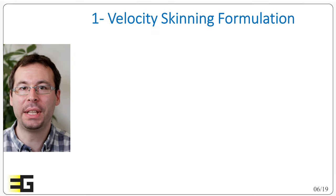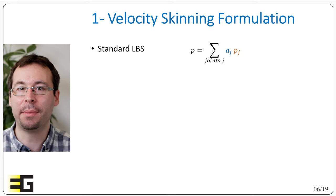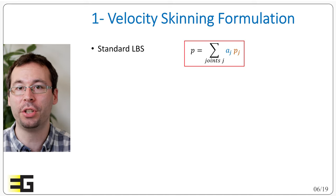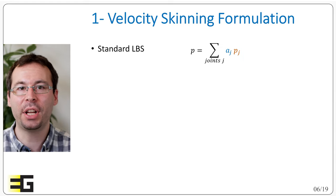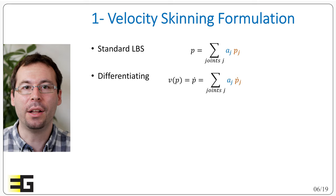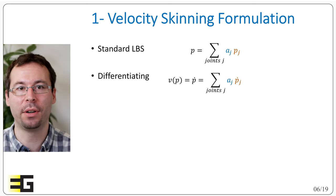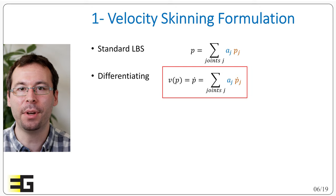And so let us start by looking at the skinning formulation in velocity. So we consider an arbitrary vertex of the mesh. In standard linear blend skinning formulation, we have the deformed position of the vertex p that is given by the sum of all the joints j of some position p_j, weighted by the value a_j. Here the a_j are the skinning weights and the p_j are the position of the so-called rigid skinning, which are the positions that would take this vertex if it was fully rigidly attached to the joint j. Now we are differentiating this relation with respect to time to express the relation in velocity. So we have the velocity of the vertex v of p is equal to p prime, which is the sum of a_j times p_j prime.